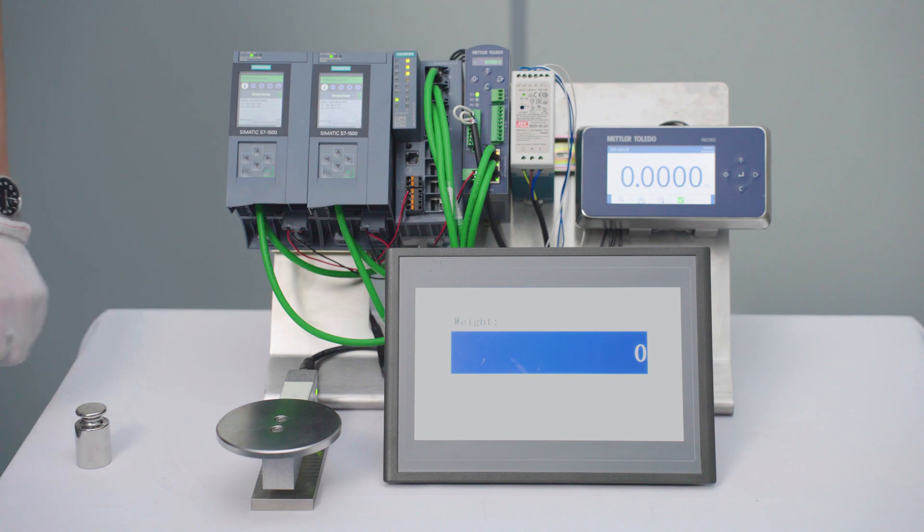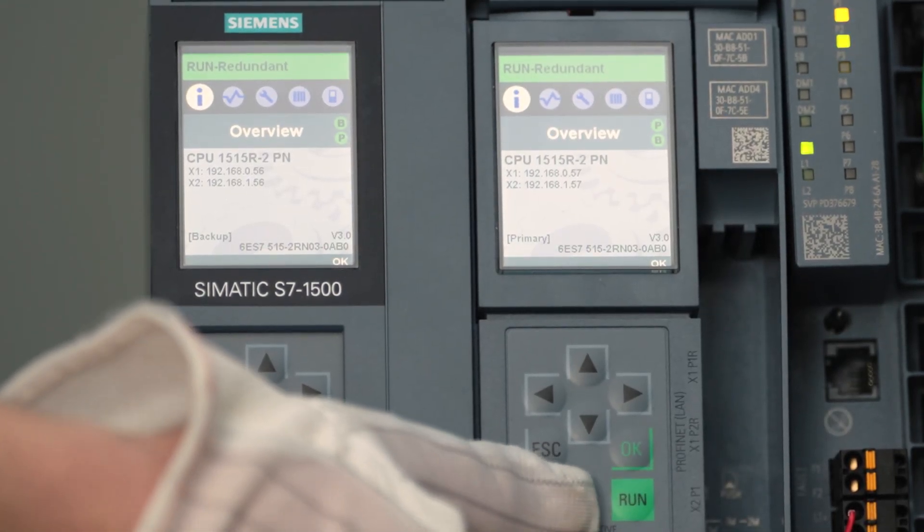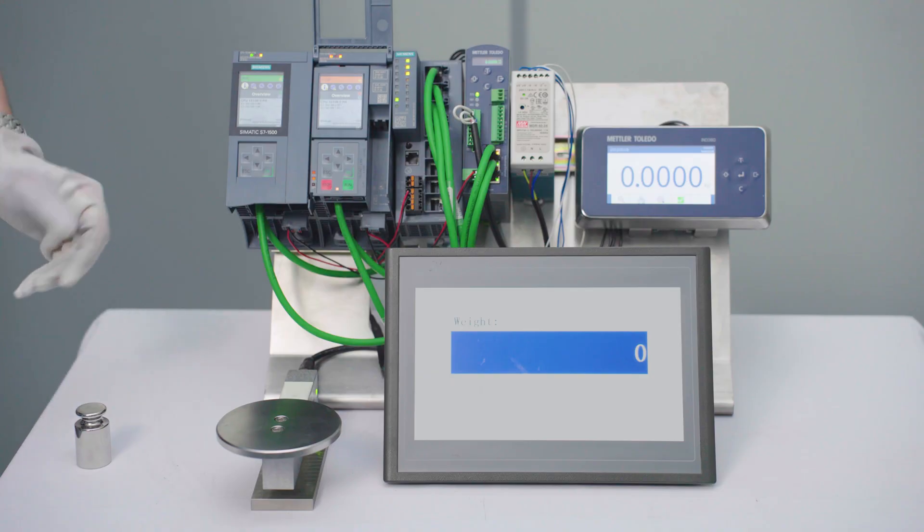Now let's simulate the failure of the backup PLC by putting this one to stop. So now the primary PLC is the only PLC executing.